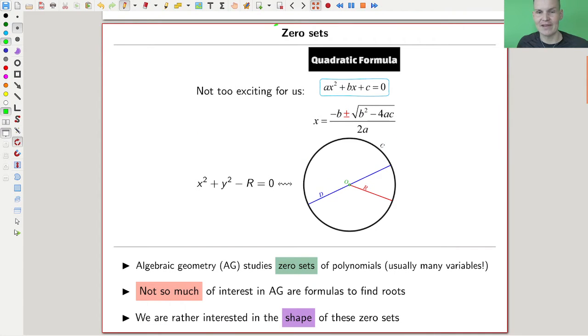Let me just sketch what is going on. I'm interested in zero sets. Here is a nice polynomial equation defining a circle of radius R: x² + y² - R = 0. The points in the plane satisfying this equation are exactly points on the circle of radius R.